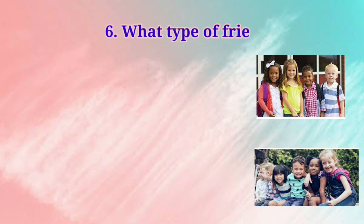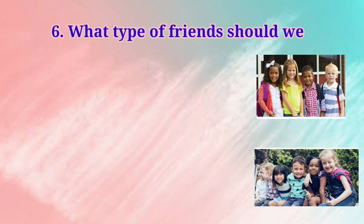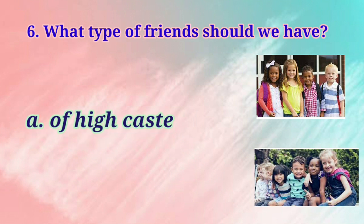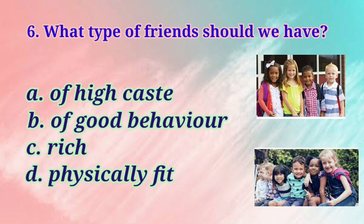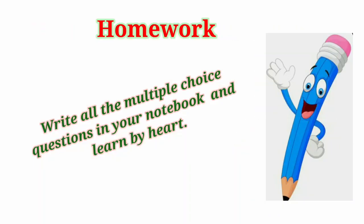Last one: What type of friends should we have? The options are: Of high caste, Of good behavior, Rich, or Physically fit. Children, we have read in the chapter that we should have friends of good behavior. It does not matter who is born in which religion or caste. So, the right option is B — Of good behavior.